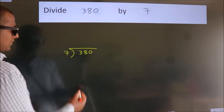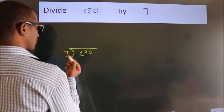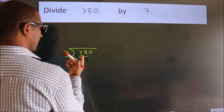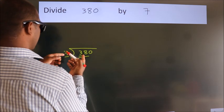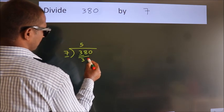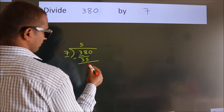Next, here we have 3, here 7. 3 is smaller than 7, so we should take 2 numbers, 38. A number close to 38 in the 7 table is 7 fives, 35. Now we should subtract. We get 3.